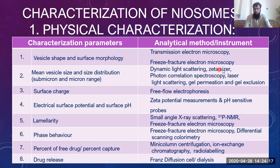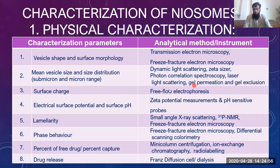The most common instrument for size measurement is the zeta sizer, where zeta potential is measured. The potential is produced by moving charged particles. The zeta value tells us the particle size. We compare it against standards. Another method is gel permeation or gel exclusion chromatography, where the gel is used to compare particle sizes — the gel in the column gives resistance to the particles.